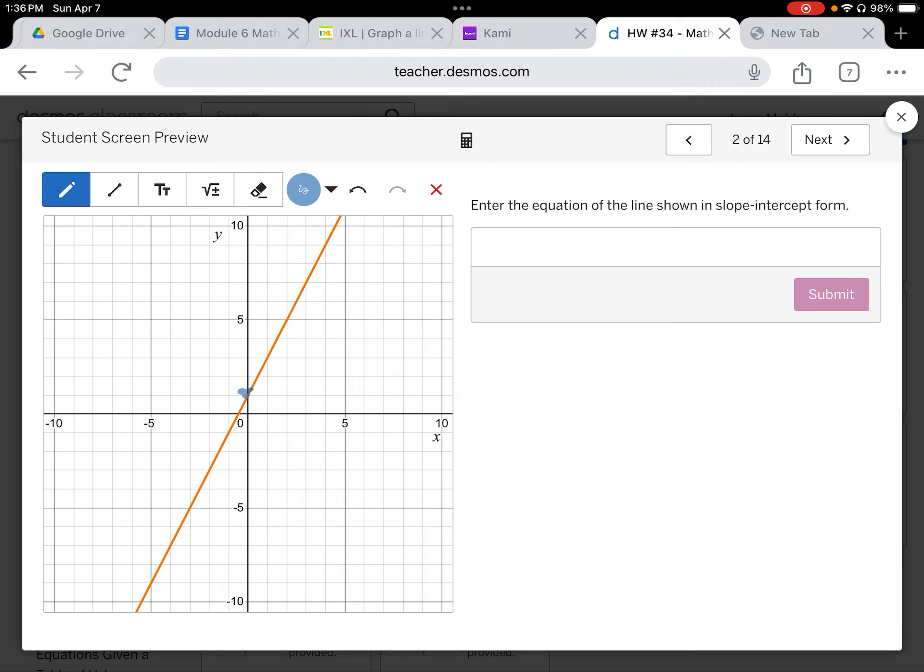Then we're going to find another point on the graph. There's one. There's one. There's one. And between two of them, any two, we're going to count our rise over run. And our rise is two, and our run is one, and it is a positive slope.